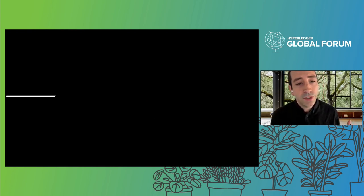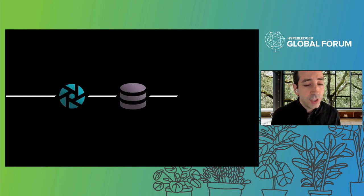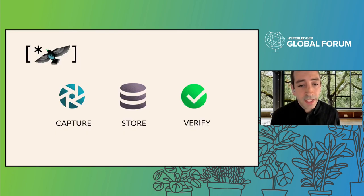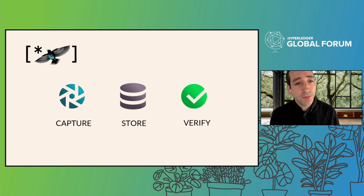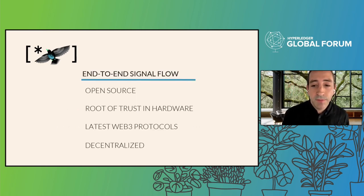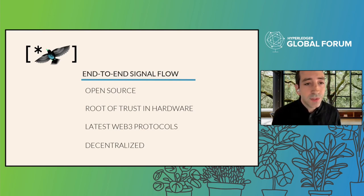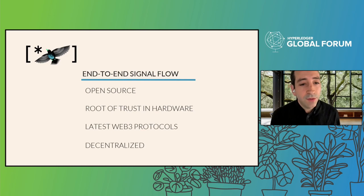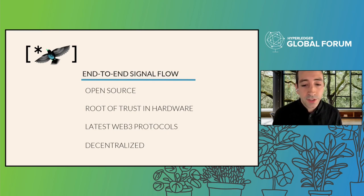As we got to thinking about it, we started to ask: how could we use new tools and technologies to secure information from capture, through storage, and then through a process of verification — which all news organizations go through — using new cryptographic tools to create what we thought of as an end-to-end signal flow? What that meant was that we were going to use open-source tools, create a root of trust in hardware, use new Web3 technologies that are ready to take on this type of challenge, and keep this entire framework decentralized.